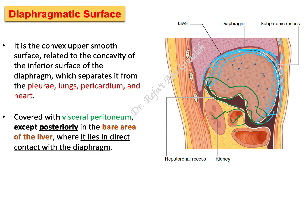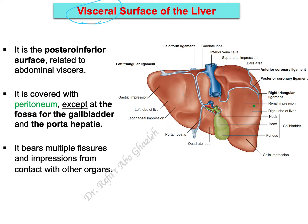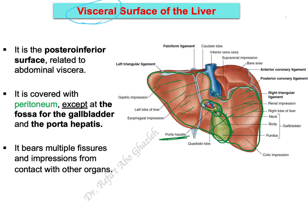In this posterior-inferior view of the liver, this is the visceral surface of the liver. You can see that it is almost completely covered by peritoneum — with exceptions. The fossa for the gallbladder is not covered by peritoneum, and the hilum of the liver, known as porta hepatis, is also not covered by peritoneum.